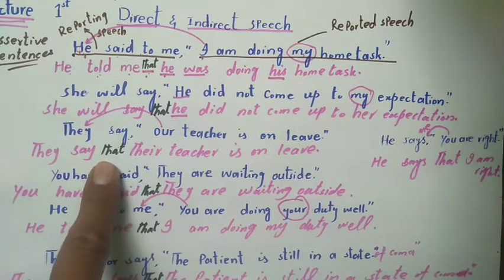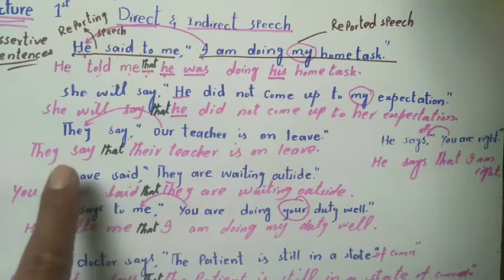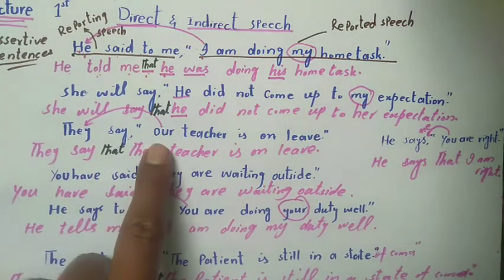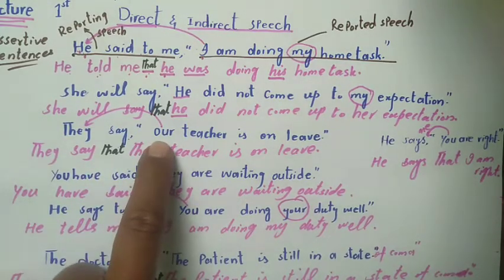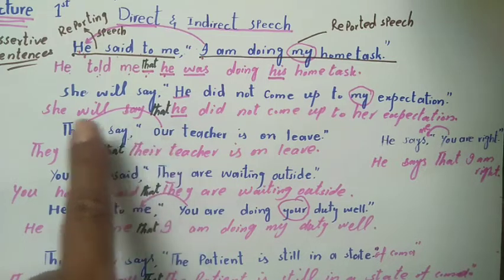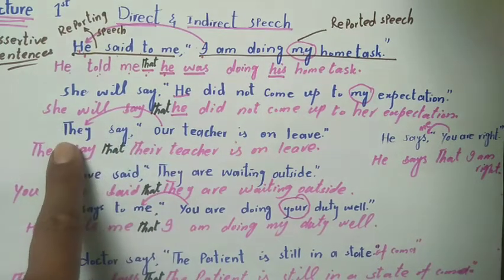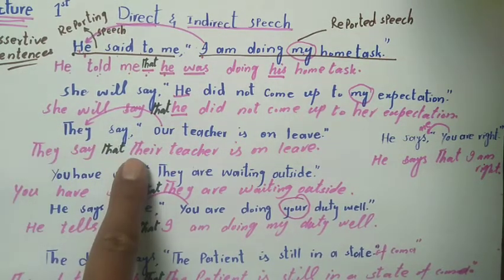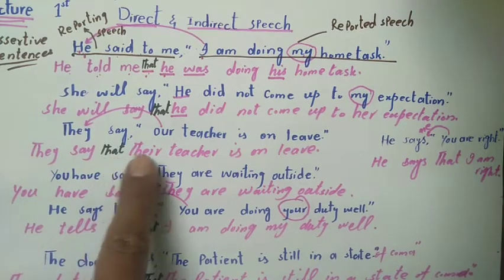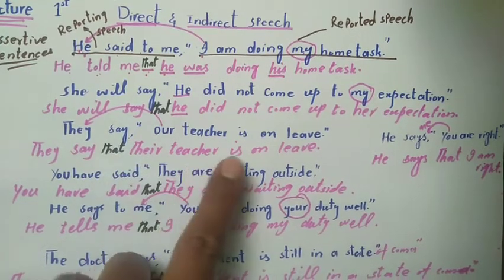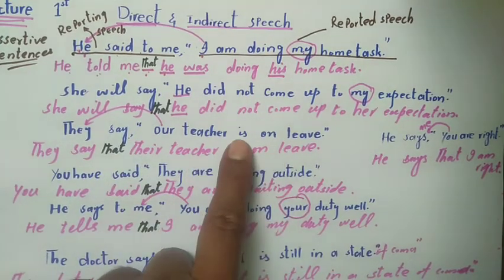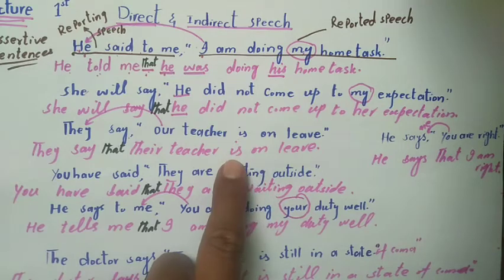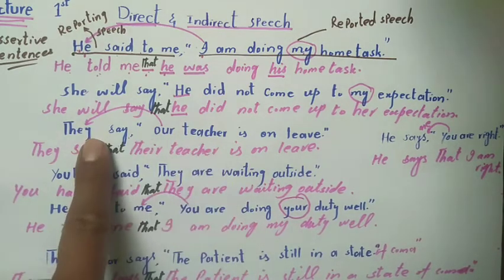We use 'that' and remove the inverted commas. The possessive 'our' is first person possessive case. Since the reporting verb is present tense, we do not change the tense. The indirect sentence becomes: 'They said that their teacher is on leave.' We do not convert to past tense because the present tense remains present.